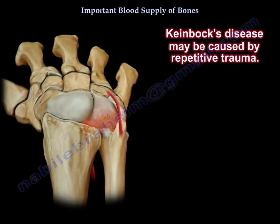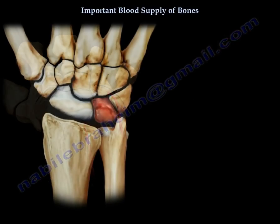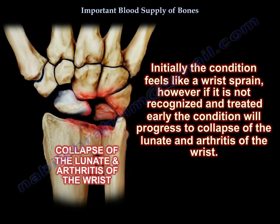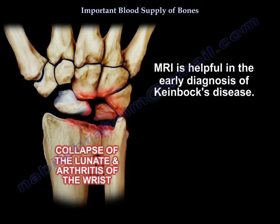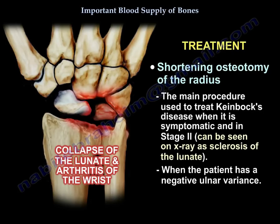Kienböck's disease may be caused by repetitive trauma, interrupting the blood supply of the lunate. Initially the condition feels like a wrist sprain, but if not recognized and treated early, it will progress to collapse of the lunate and arthritis of the wrist. MRI is helpful in diagnosis. When symptomatic and at stage 2 — visible on X-ray as sclerosis of the lunate — and when the patient has a negative ulnar variance, the treatment is shortening osteotomy of the radius.